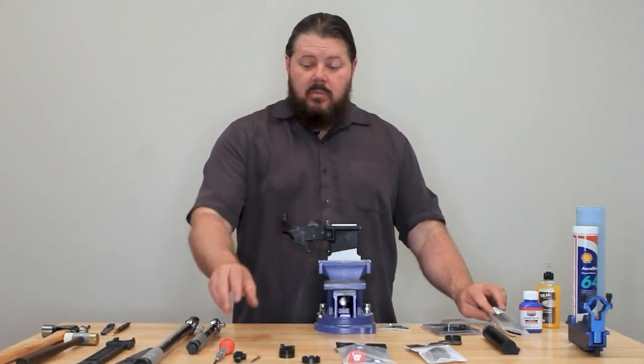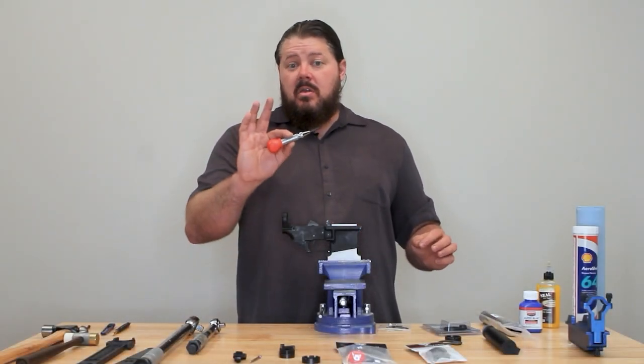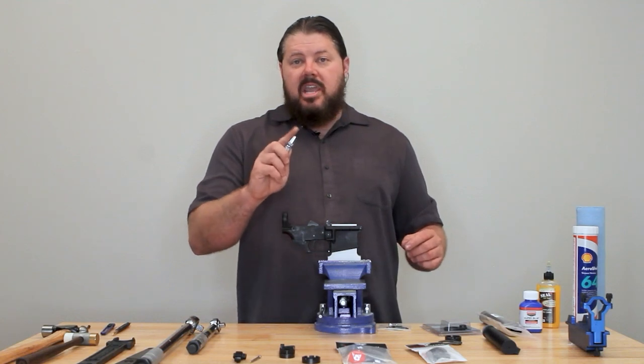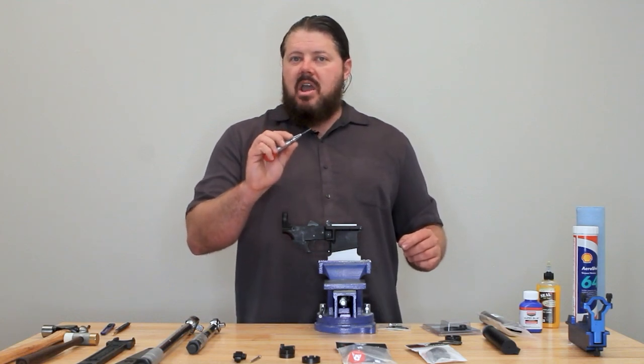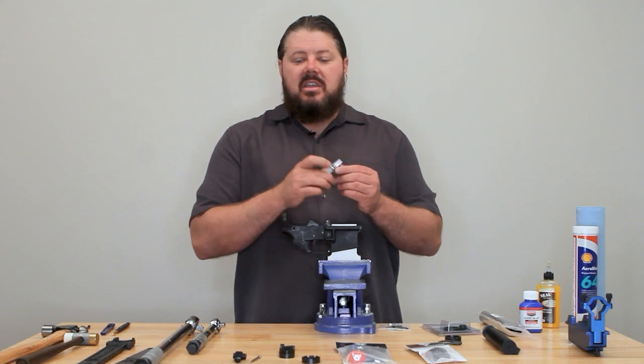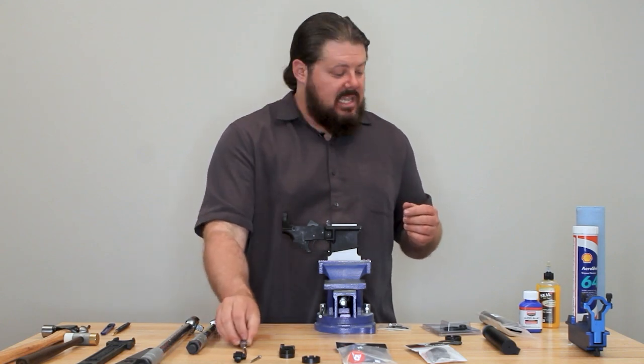So step one, which we've already done, would be putting our straight wall staking tip in our automatic center punch. If you didn't purchase it already installed, go ahead and get that put together.